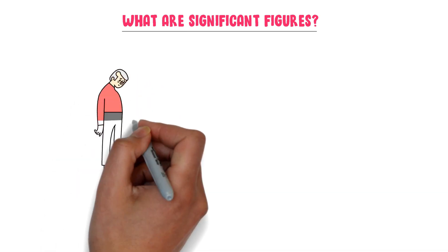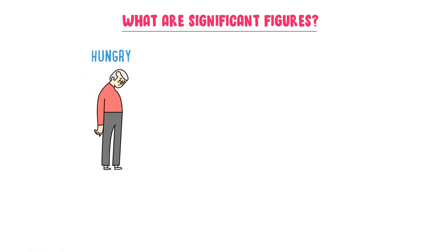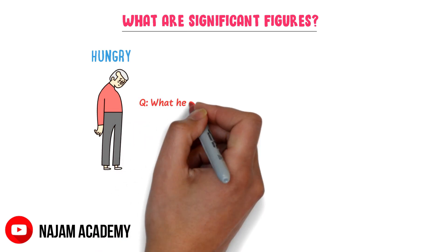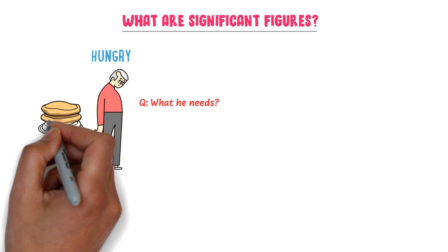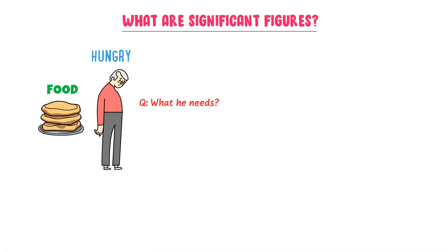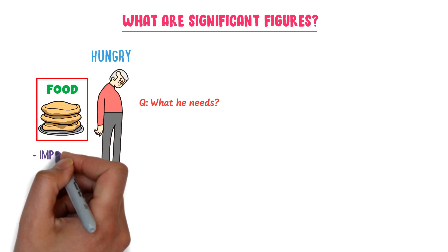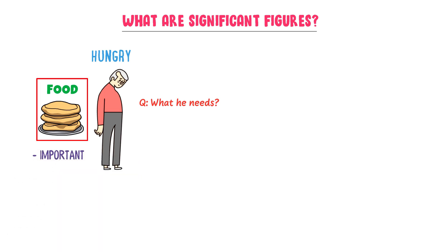Consider a hungry man who can only afford cheap food. What does he need in order to kill his hunger? The answer is simple — he needs food. Here, we say that food is important. It is certain that food will relieve his hunger. We say that food is a reliable source.